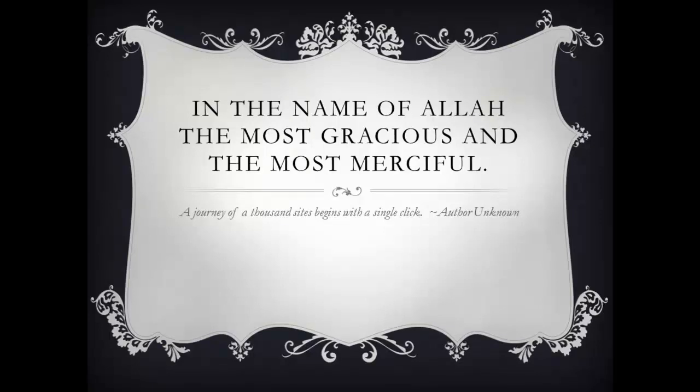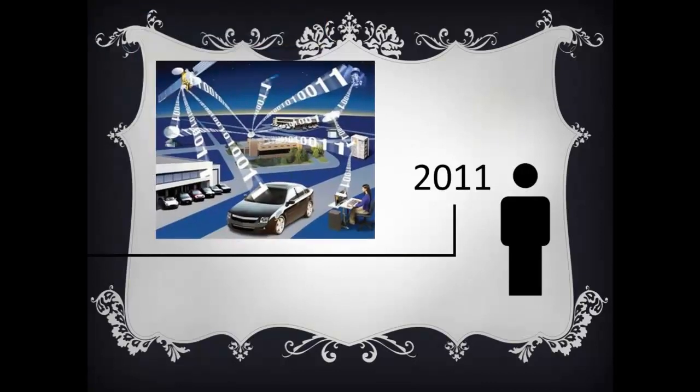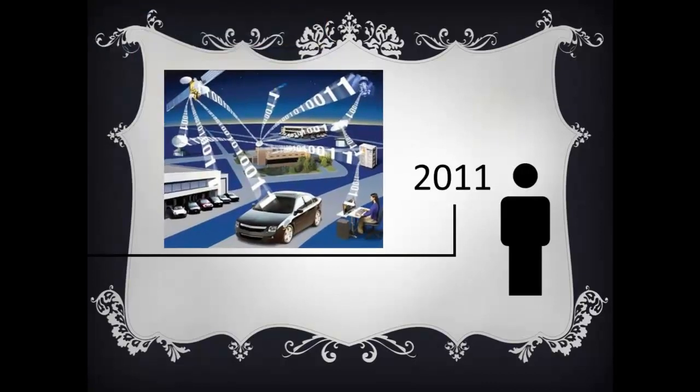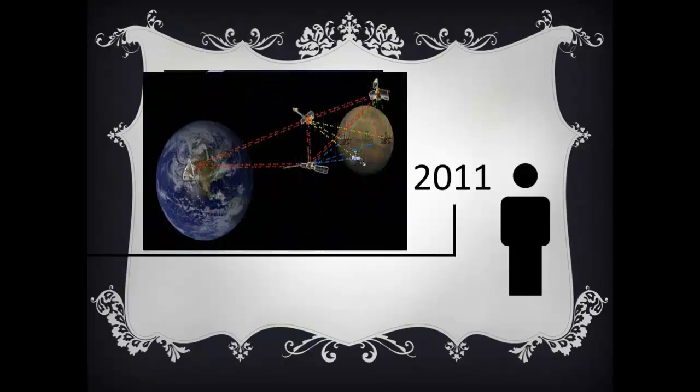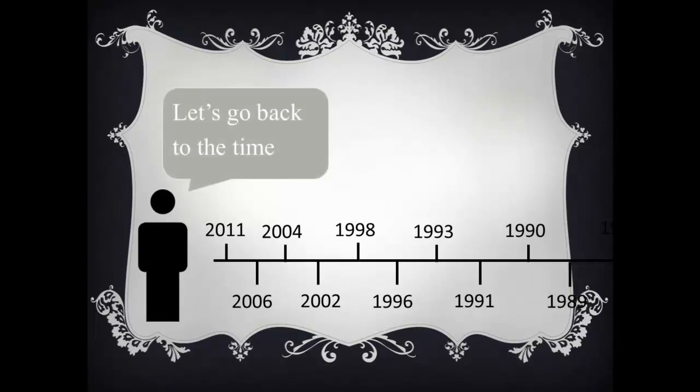Bismillahirrahmanirrahim and assalamu alaikum. This video will tell you about the history of the internet. Today we live in a world where people and machines work together regardless of geographical restrictions. While sitting at our homes we control our businesses. Sitting on the earth we control the satellites orbiting us. This is all because of the development in the communication technology, especially the internet.